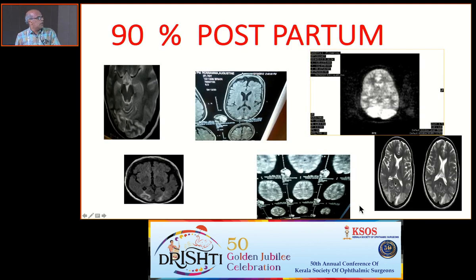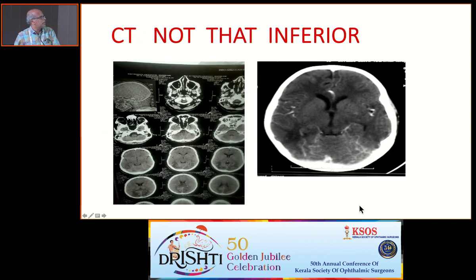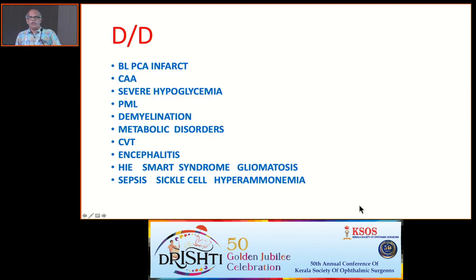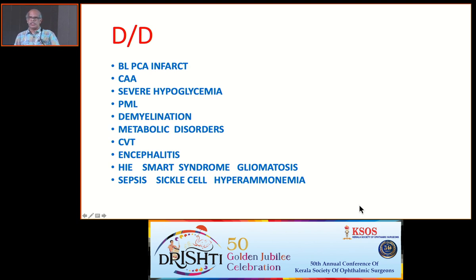Differentials include bilateral PCA infarcts. 90% of PRES cases are postpartum, so always be very careful with a postpartum patient. CT is not inferior — you can get positive CT findings in many cases, showing bilateral hypodensity in the occipital lobes. Differentials also include cerebral amyloid angiopathy, hypoglycemia, progressive multifocal leukoencephalopathy, demyelination, and metabolic causes. If it doesn't fit the predisposing factors, extensive investigation by neurologists and other specialties is needed.